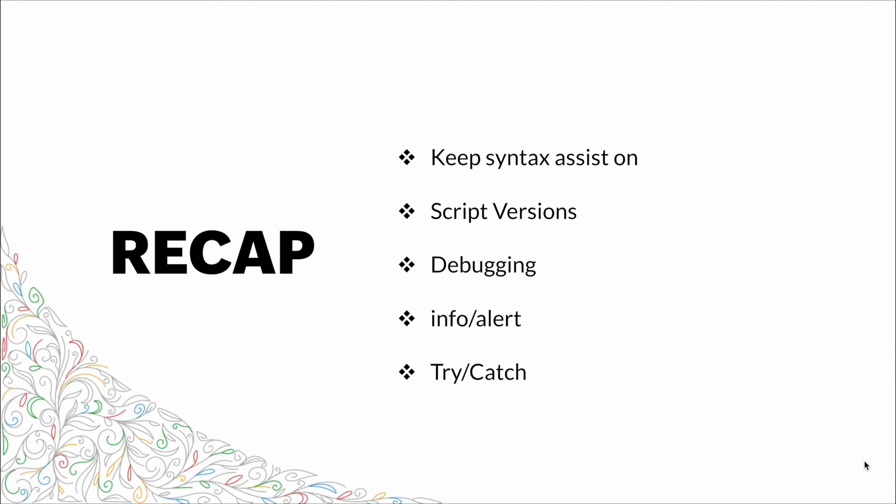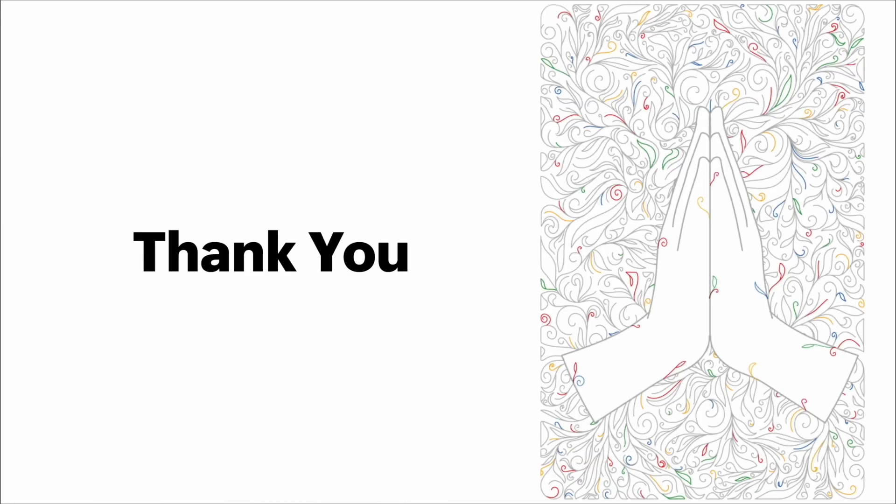A quick recap: we spoke about keeping Syntax Assist on and how valuable it is when writing syntax — the editor helps you write it properly. We spoke about script versioning, which allows you to keep different versions of your script so you don't have to worry about deleting or making changes to your code. We talked about debugging and the several options available with Deluge, like the info and alert features and our try and catch blocks. Make sure you use all these tools, keep track of your code with script versioning, and debug with the options Deluge provides. Thank you — I hope you found this very educational.